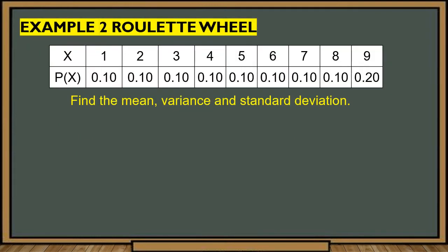Here is the roulette wheel table. The values of x — the numbers on the roulette — are 1 through 9. Their corresponding probabilities are: P(1) = 0.10, P(2) = 0.10, P(3) = 0.10, P(4) = 0.10, P(5) = 0.10, P(6) = 0.10, P(7) = 0.10, P(8) = 0.10, and P(9) = 0.20. Observe that all values have equal probabilities except for 9, because the roulette wheel is unfair as the owner made it so.